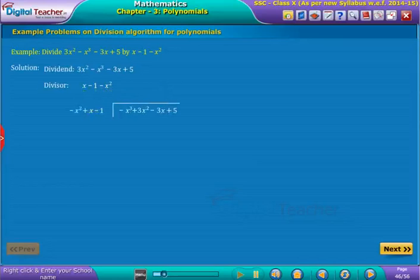So arrange the dividend and divisor in decreasing order as shown on screen. Now by dividing dividend with the divisor...